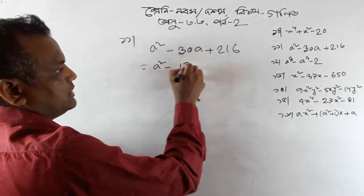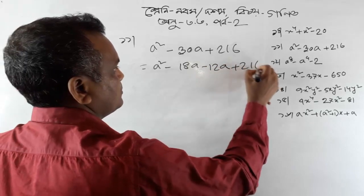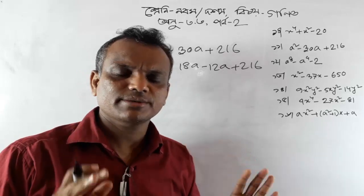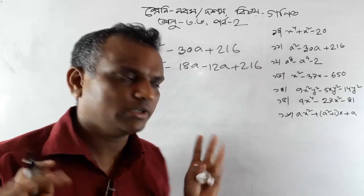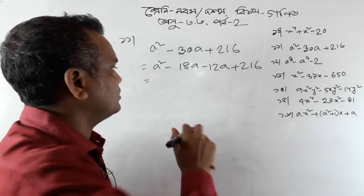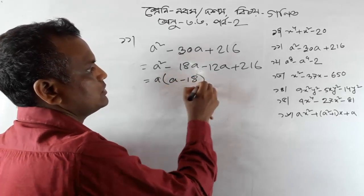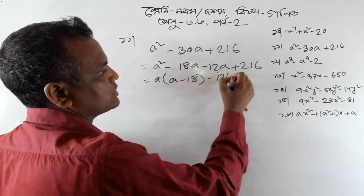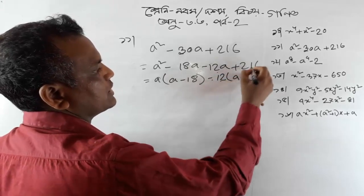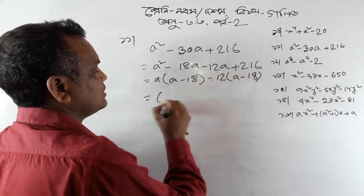We have a question: a squared minus a minus 2a plus 2. 8 or 2 is equal to 3. What two increases in the middle of a minus 2, a minus 2, a minus 3, a minus 2?